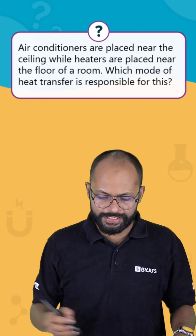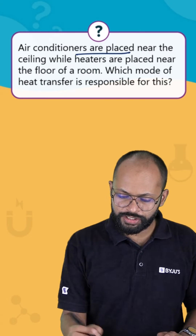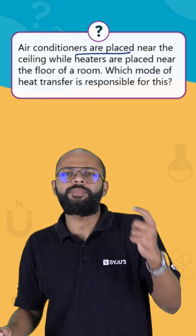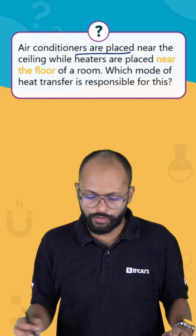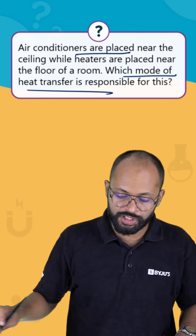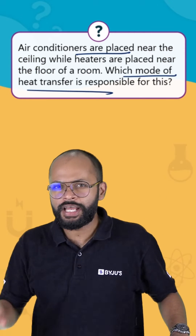Welcome to SCO Booster Shots. The question for today is: air conditioners are placed near the ceiling, while heaters are placed near the floor of a room. Which mode of heat transfer is responsible for this?